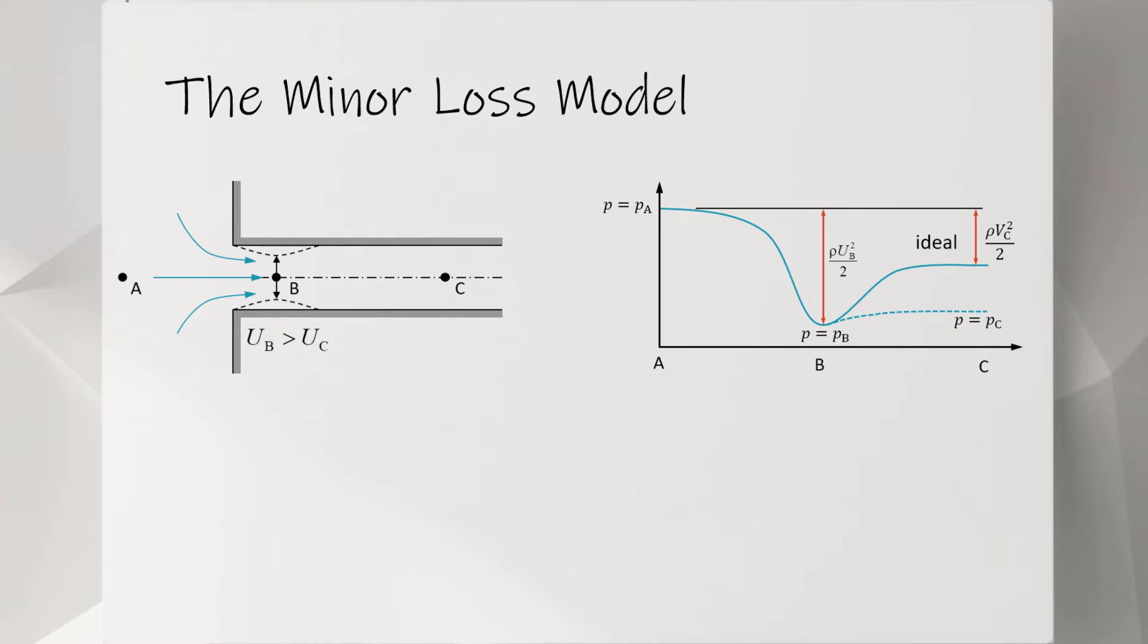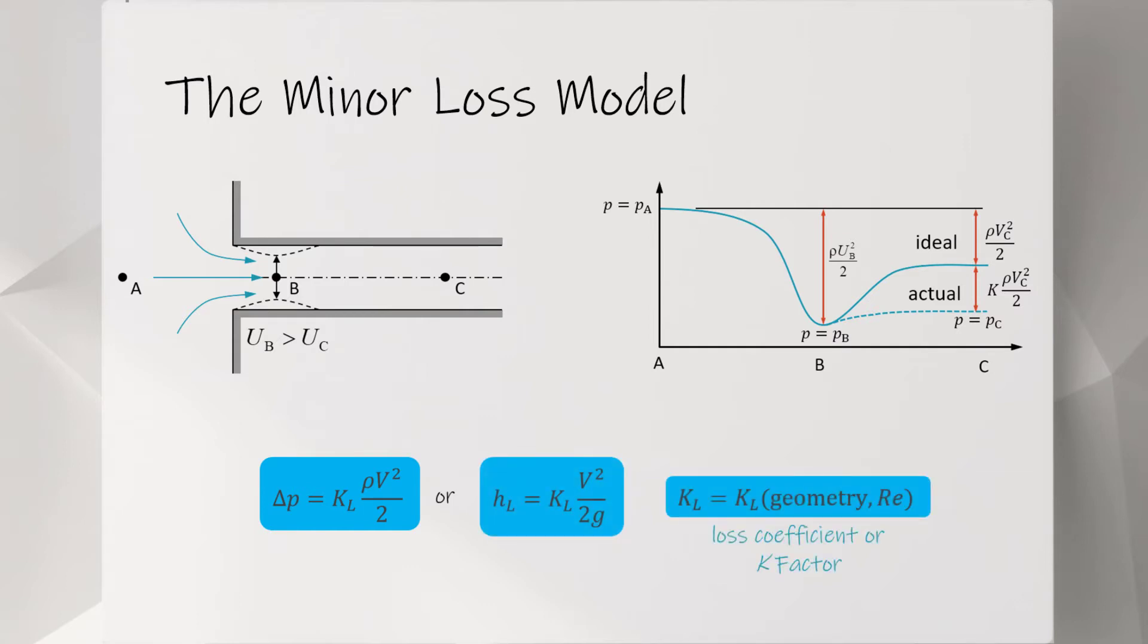In reality, the actual operating condition will be a lower pressure at location C. This is caused by the pressure losses that can be estimated as a percentage of the kinetic energy. The pressure variation and the loss equation can be expressed in this form, where KL is the loss coefficient or K factor that is a function of geometry and Reynolds number. The loss coefficient gives us an estimate of how far we are from the ideal conditions due to viscous losses.